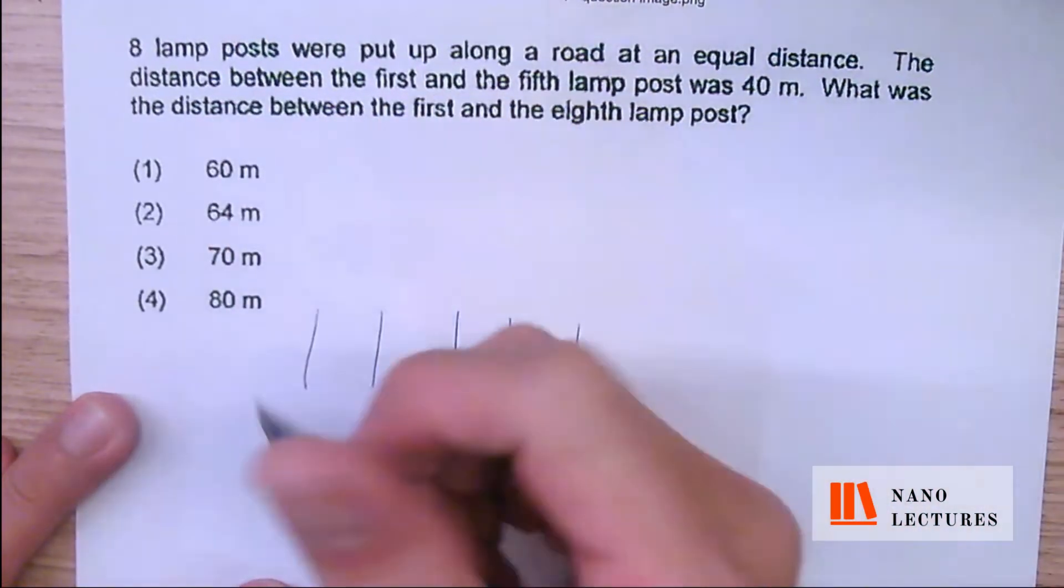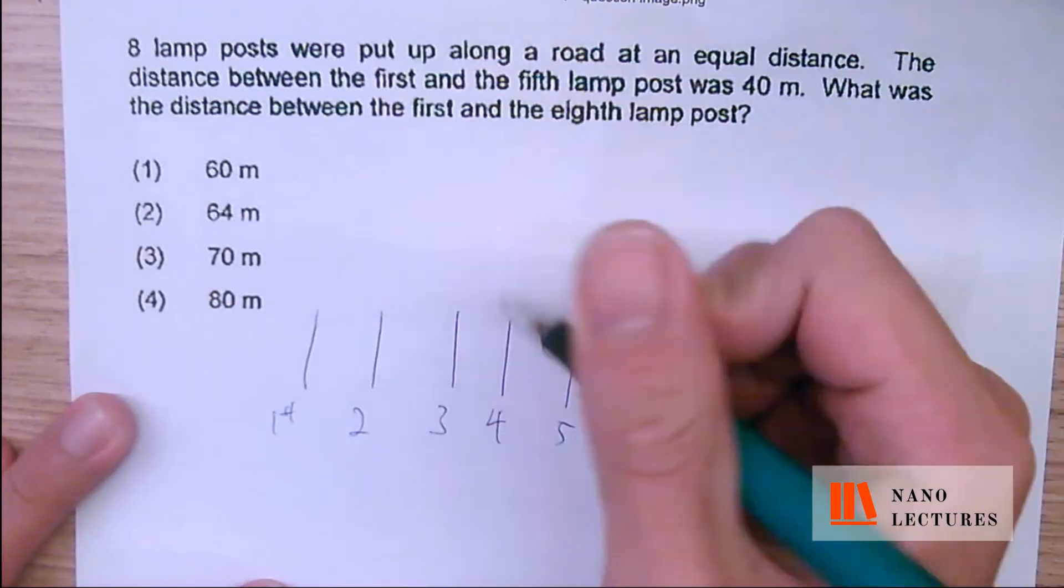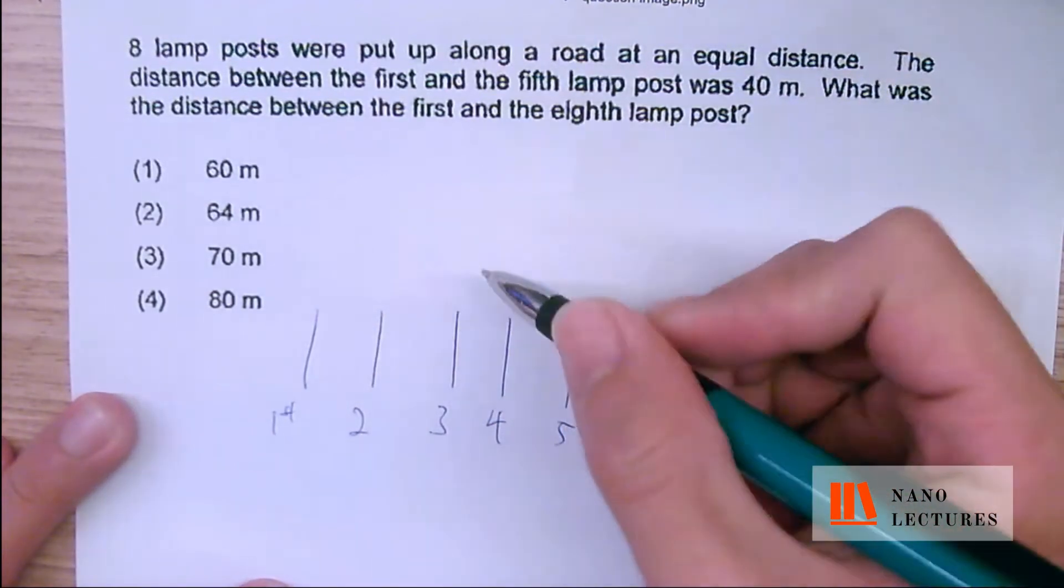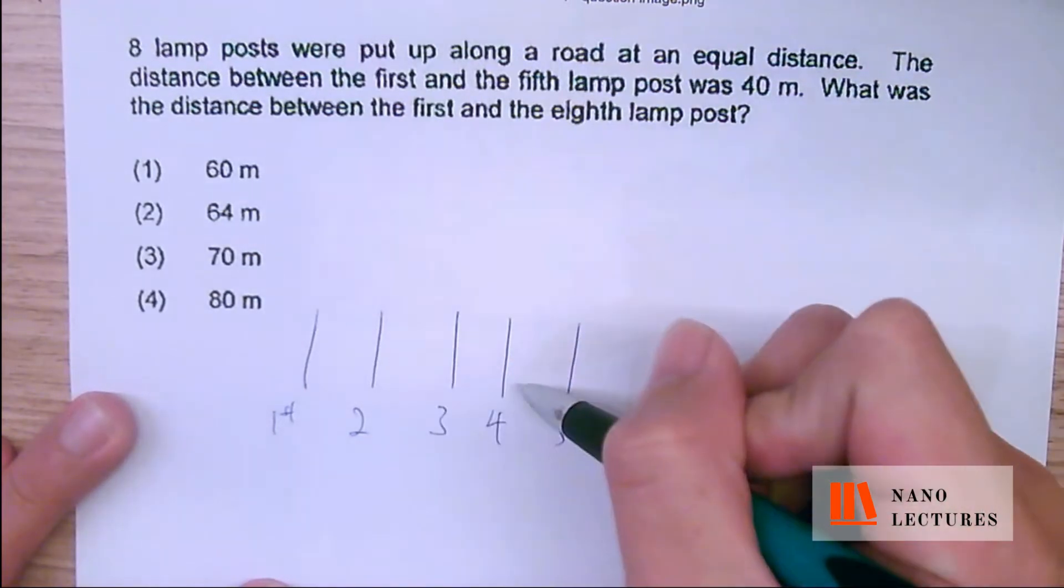The distance between the 1st and the 5th lampposts. This is the 1st, 2nd, 3rd, 4th, 5th. How many spaces are there in between? A lot of students always think that there are 5 spaces because there are 5 lampposts.